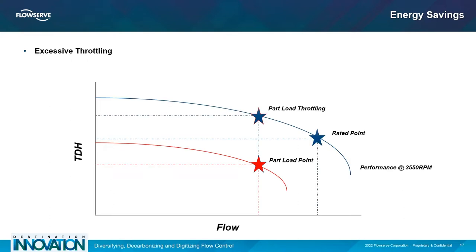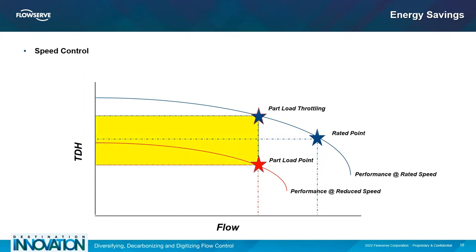For example, throttling on the discharge side of the pump would push the point of operation away from the rated point and farther back on the performance curve to a lower flow condition. This is represented by the part load throttling star. If any excess head were throttled downstream of the pump to achieve the part load operating point given by the red star, then the pump may cavitate excessively, experience internal recirculation, or any other mode of excessive wear and tear. A better option may be to slow the pump running speed to achieve a part load operating point with no to little throttling necessary. This would save the energy highlighted in yellow from becoming a destructive force against the pump, its seal, and the accompanying system.